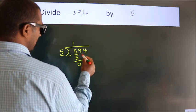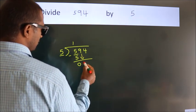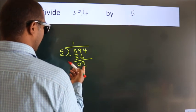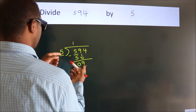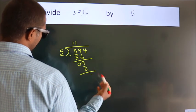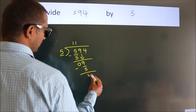After this, bring down the beside number, so 9 down, so 9. A number close to 9 in the 5 table is 5 once, 5. Now we subtract and we get 4.